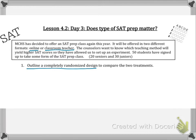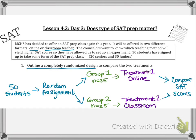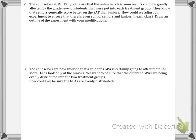We are going to outline a completely randomized design to compare the treatments. We take our 50 student volunteers and randomly assign them to one of two groups. Group one will have 25 students and group two will have 25 students. Treatment one is the online prep course and treatment two is the classroom prep course. At the end, we will compare their SAT scores.